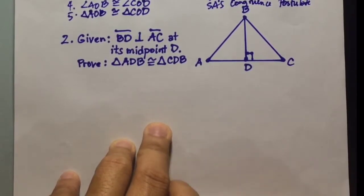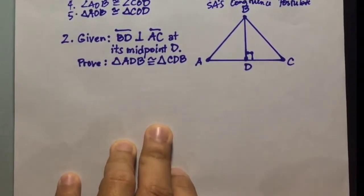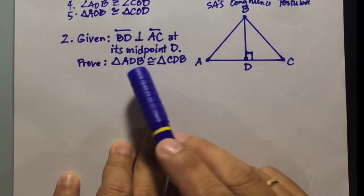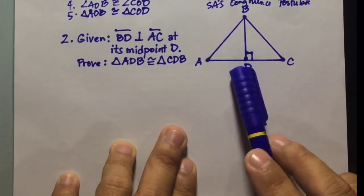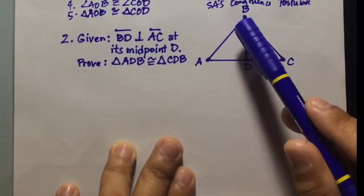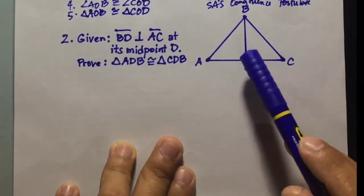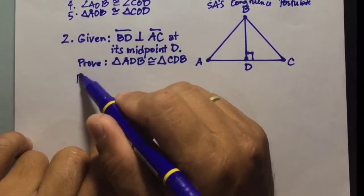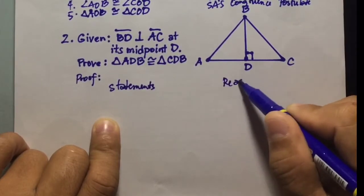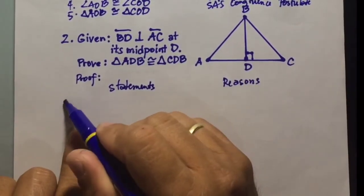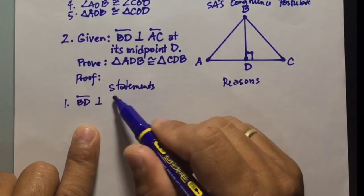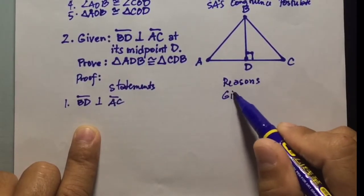For number two, given that line segment BD is perpendicular to line segment AC at its midpoint D — so D is the midpoint of AC — we are going to prove that triangle ADB is congruent to triangle CDB. Statement number one is the given: line segment BD is perpendicular to line segment AC. The reason is 'given.'